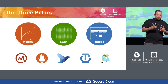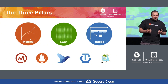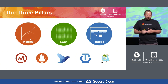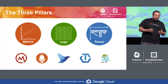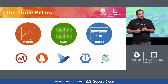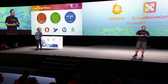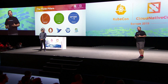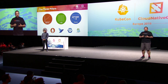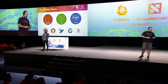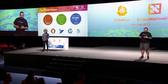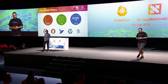Metrics — normally time series data. This is the kind of thing you'd use if you're doing trends of memory usage or latency. The CNCF has some great projects in this space. OpenMetrics is an exposition format — a format for exporting metrics from your application. And Prometheus is probably now the de facto monitoring system for Kubernetes and apps on Kubernetes.